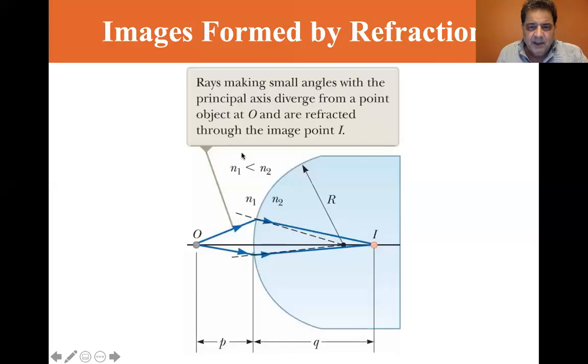That's the situation that we have. Now let's share the screen with the PowerPoint. You can see that this little paperweight is similar to this. As a matter of fact, the example problem I'm going to do is exactly of a paperweight. Rays making small angles with the principal axis diverge from a point object at O and are refracted through the image point I.